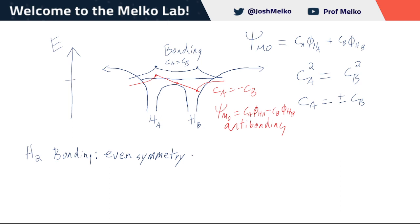Even symmetry means the wave function of this molecular orbital at coordinates x, y, z has the same amplitude — same magnitude — as if I look at negative x, negative y, negative z. An even function, like we typically think about in math, would be something like x squared — x to the power n, where if n is even, it's an even function. So x squared is an even function because if I go out in the x-axis, the sign is the same as if I go negative x. Whereas x cubed in the positive x direction gives positive y, and in the negative x direction gives negative y — that would be odd symmetry.